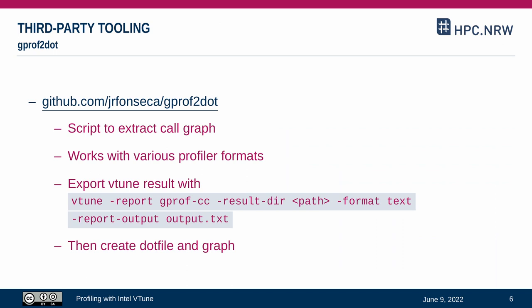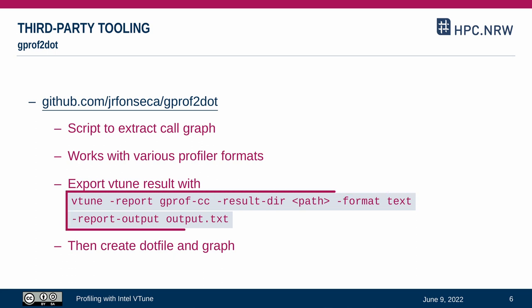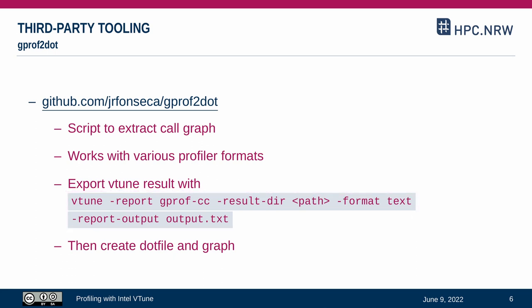There are some third-party tools that can make use of vTune's results. One example is GPROF2DOT, which can read the results of various profilers and create a complete call graph in the commonly used DOT format. As an intermediate step, you have to instruct vTune to export the results in the correct format. The final graph is essentially a big map of your application structure and can help you understand the order of operations.